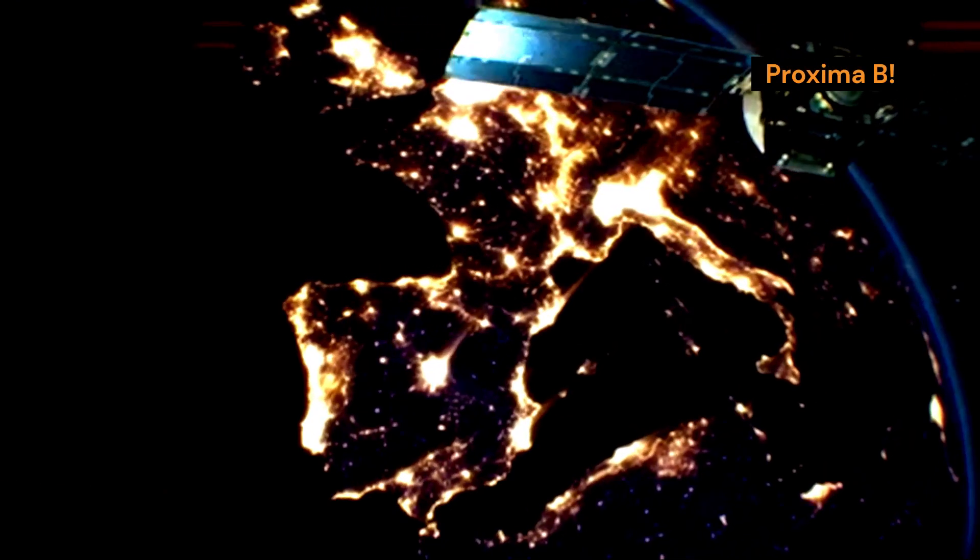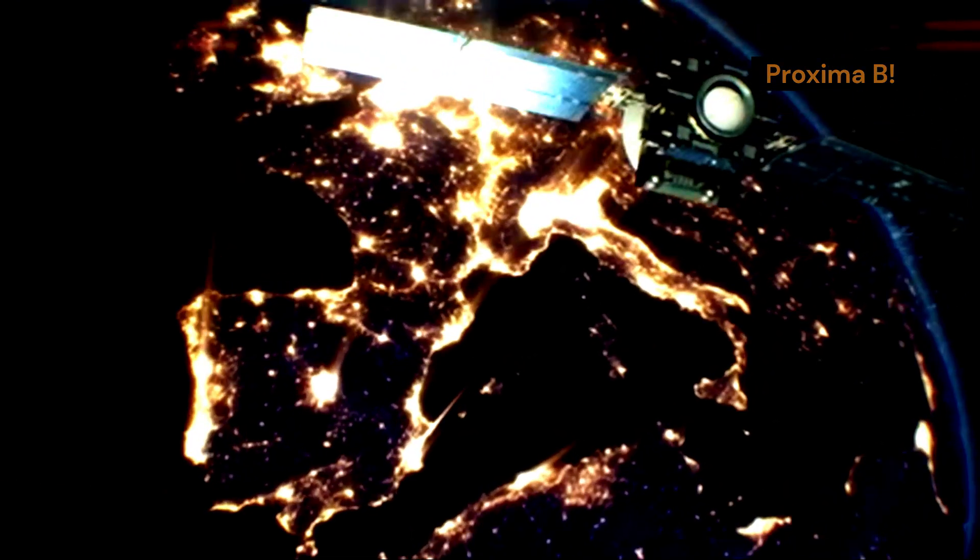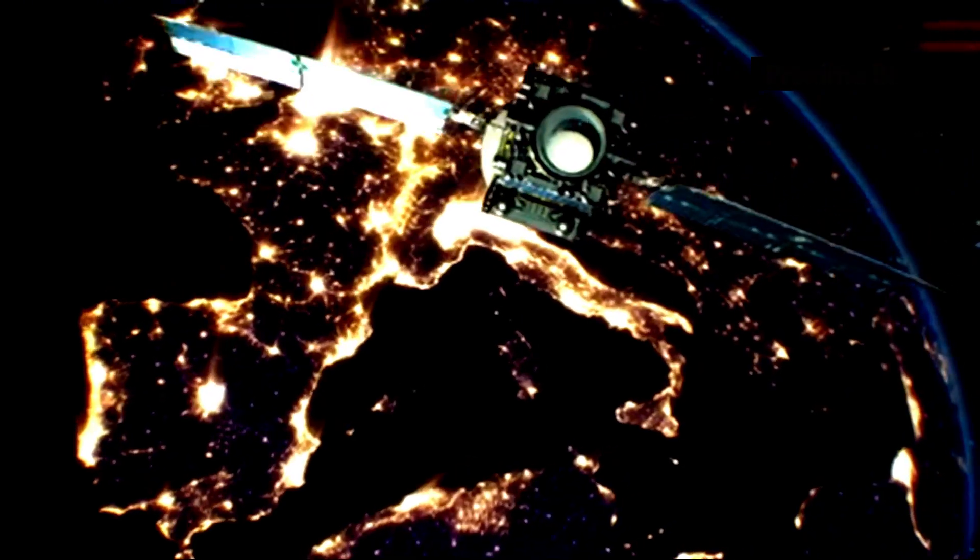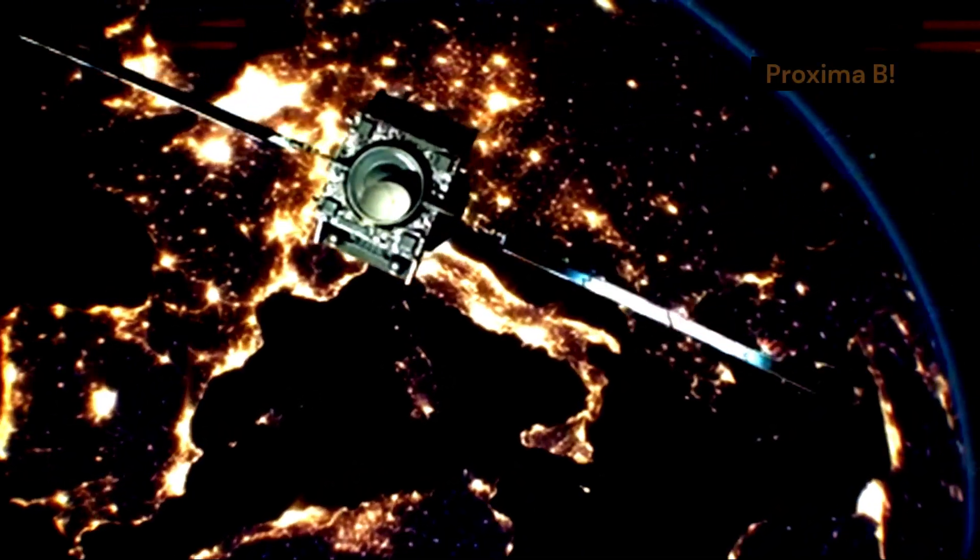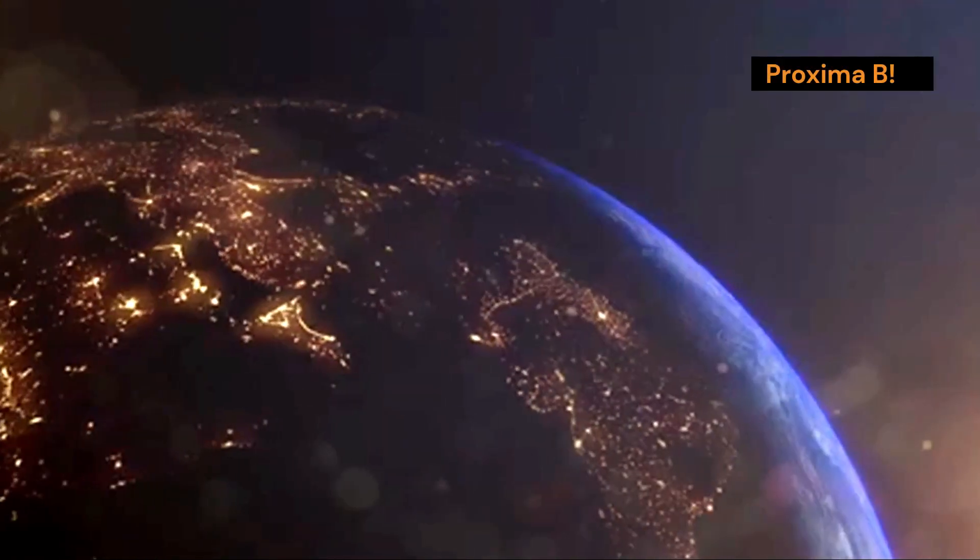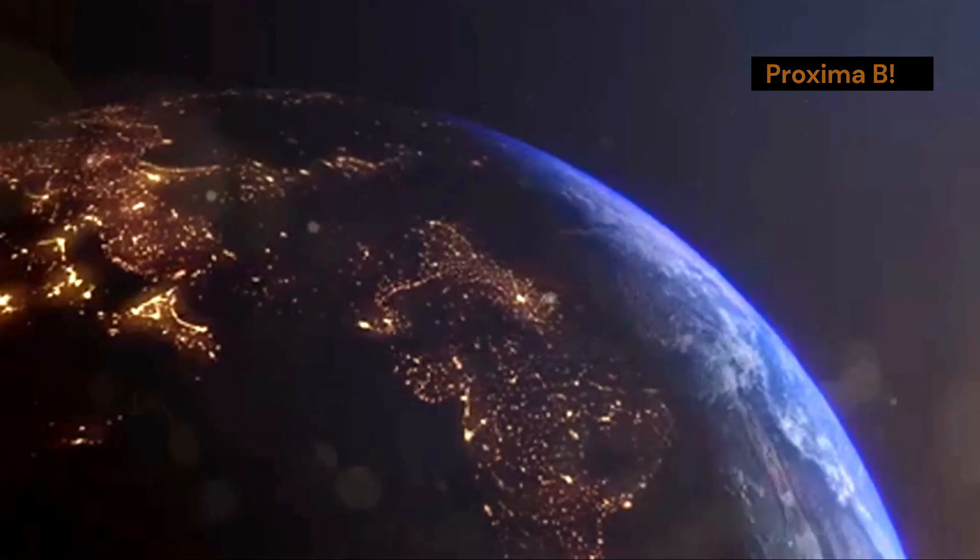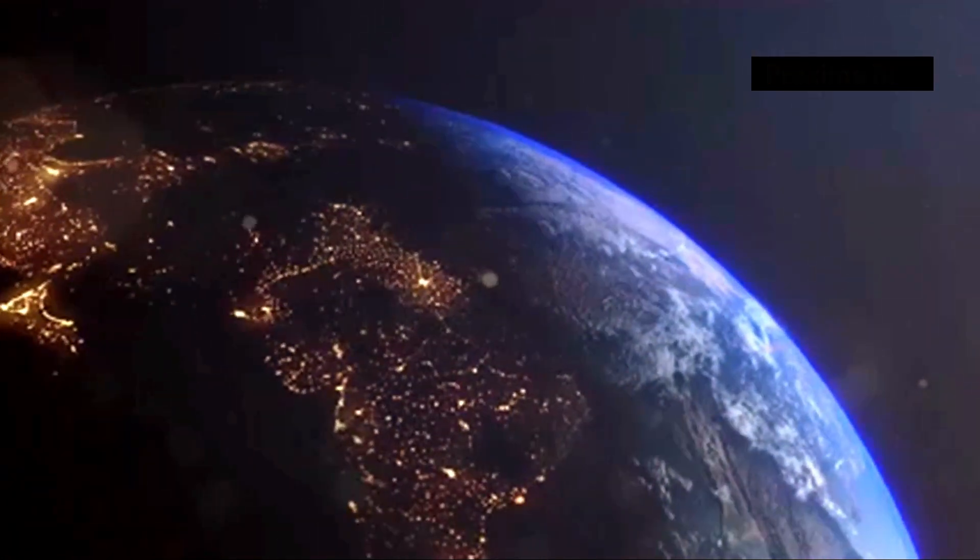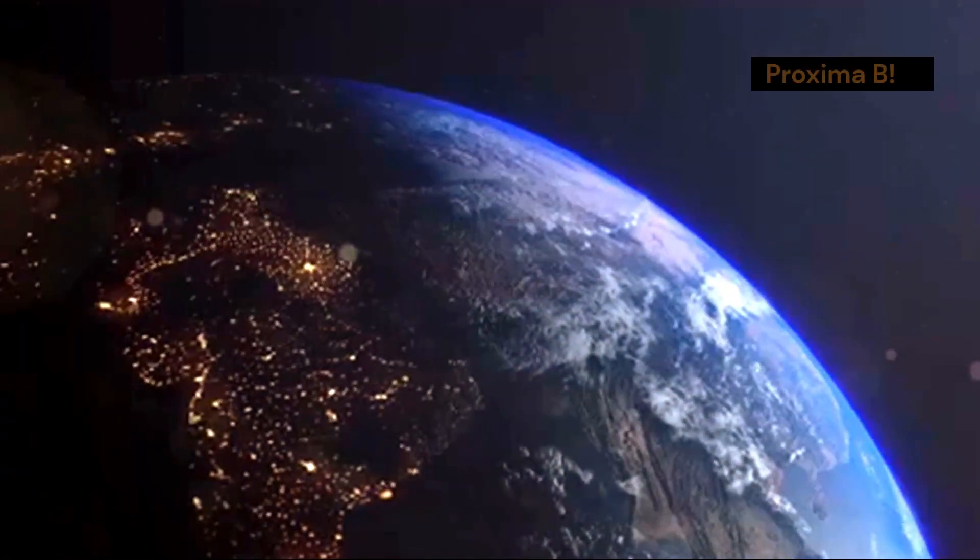So, where is everyone? This question has puzzled scientists and astronomers for decades, leading to numerous theories and speculations. The discovery of potential city lights on Proxima b, a star system relatively close to our own, adds a new layer of complexity to this paradox.